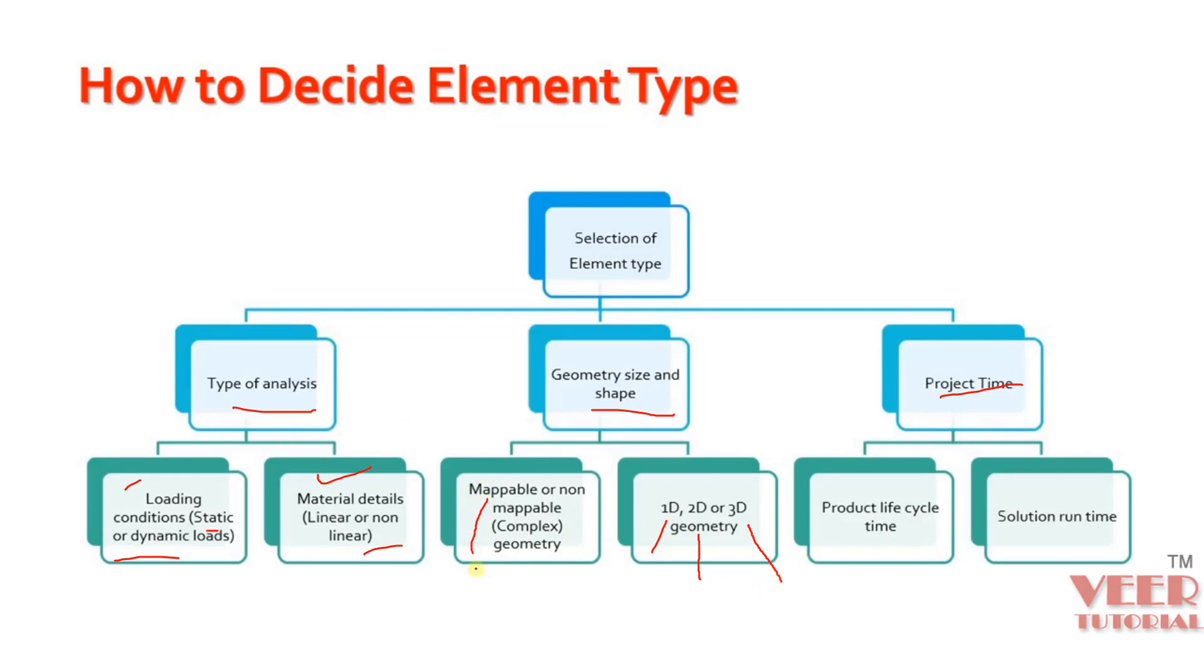And when we have a mappable geometry, we are going to use the hex element or prism element. And whenever we have a very complex geometry, we cannot create a good quality mesh by using the hex mesh. So in that situation, we need to use the tetra element. And whenever we have very less time to solve the problems, we are going to use 1D and 2D elements more than 3D element, because when we use the 3D element, it is going to increase the solution time.